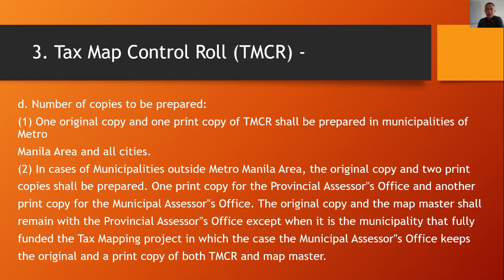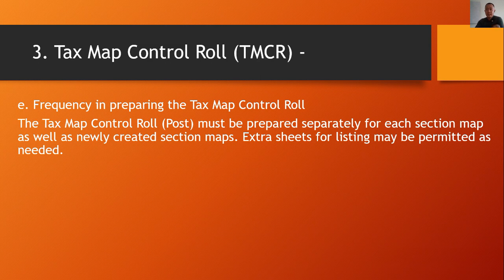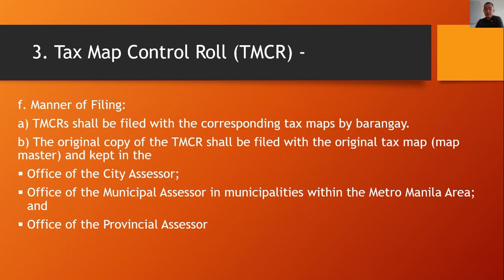One original copy and one printed copy should be prepared for municipalities. The TMCR must be prepared separately for each section map as well as for newly created section maps; extra sheets may be permitted as needed. For filing, the TMCR shall be filed with the corresponding tax maps by barangay. The original copy of the TMCR shall be filed with the original tax map and kept in the office of the city or municipal assessor in Metro Manila, and in the office of the provincial assessor.